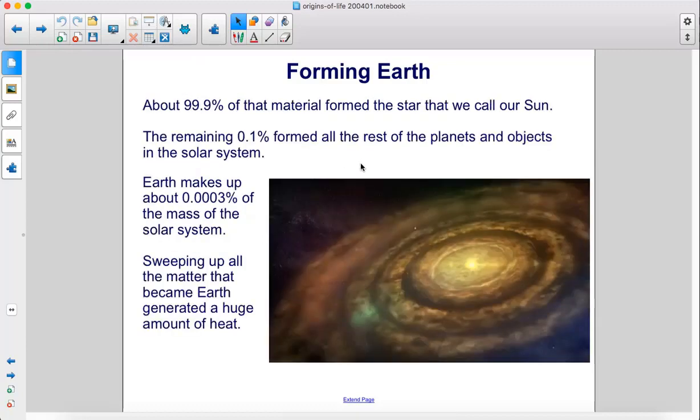About 99.9% of that material formed the star that we call our Sun. The remaining 0.1% formed all the rest of the planets and objects in the solar system.